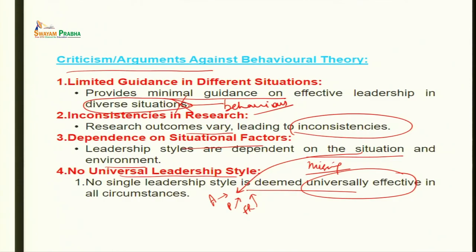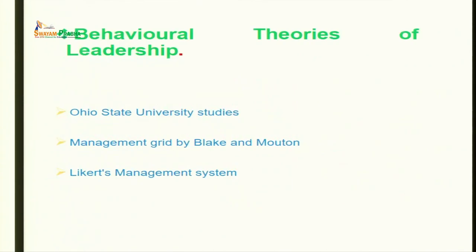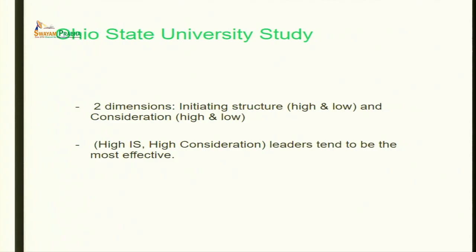We shall now discuss three prominent behavioral theories of leadership: the Ohio State University studies, the Managerial Grid by Blake and Mouton, and Likert's management system. The Ohio State University study identified two dimensions: initiating structure and consideration, each of which can be high or low.